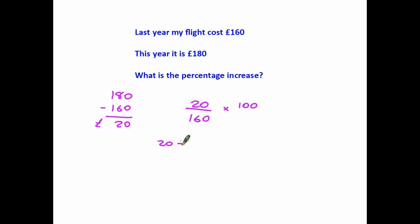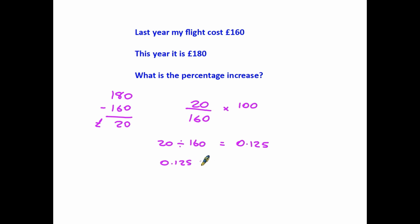So our calculation is: 20 — that is the change — divided by 160, which is the original amount. Change divided by the original. If we do that we get 0.125. That is a decimal. We want to change that into a percentage, so 0.125 multiplied by 100 equals 12.5. That is the percentage change: the change divided by the original, multiplied by 100.